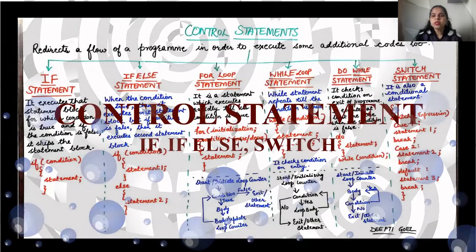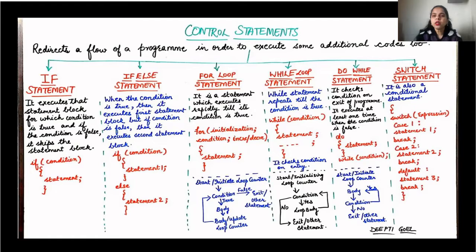Welcome students, welcome to the new session of the programming language. Today we shall be discussing about control statements. Control statements are certain statements which direct the flow of a program. If certain statements are getting repeated and we have to write them again and again, these statements will start a loop, check conditions whether true or false, and execute statements accordingly, directing the flow of the program — which block to execute and which to skip.